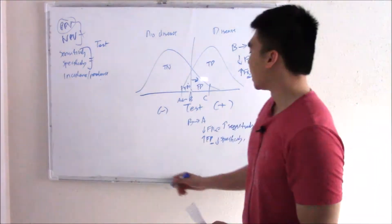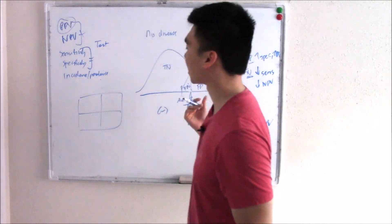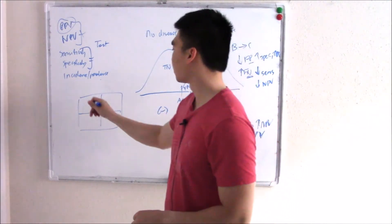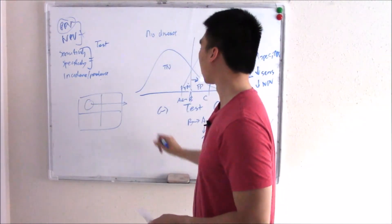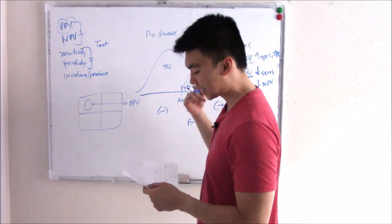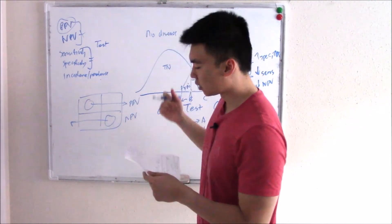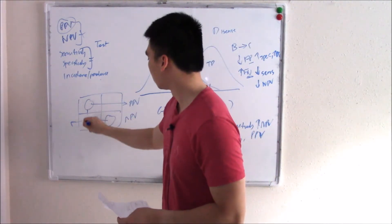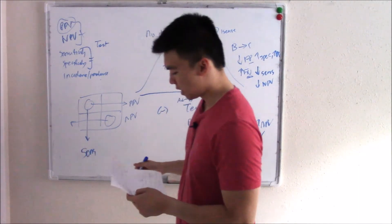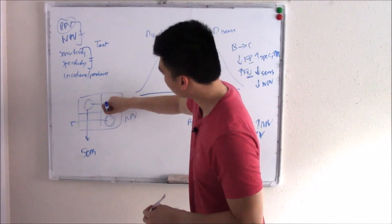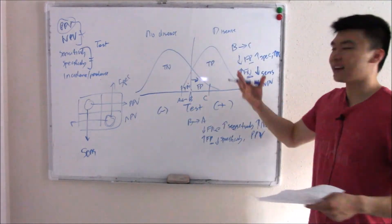Here's your cheat sheet. For positive predictive value: true positive divided by the total in the positive test column. For negative predictive value: true negative divided by the total in the negative test column. For sensitivity: true positive divided by the total in the disease-positive column. For specificity: true negative divided by the total in the disease-negative column. That's it in a nutshell.